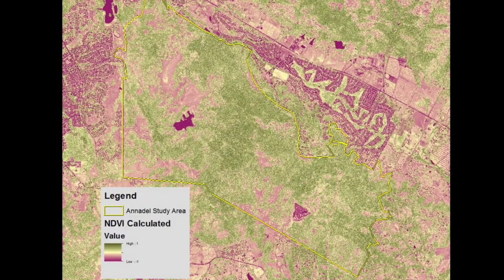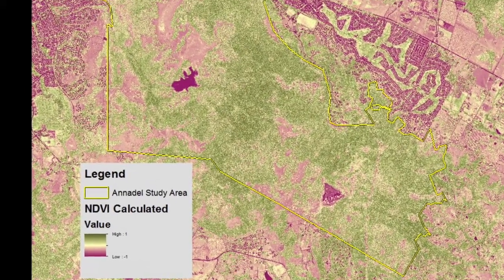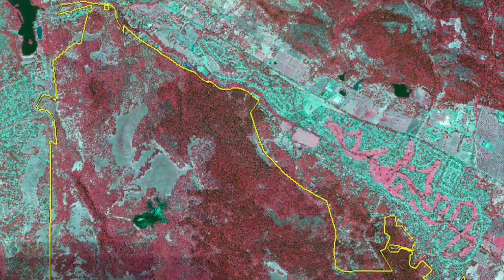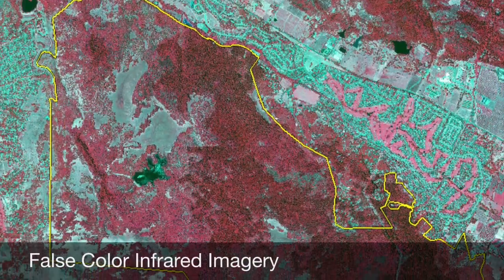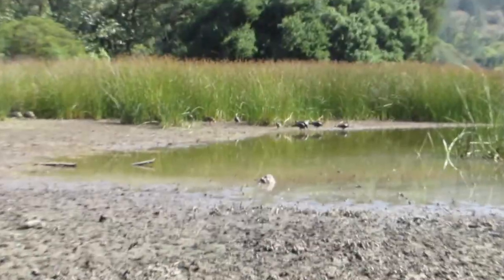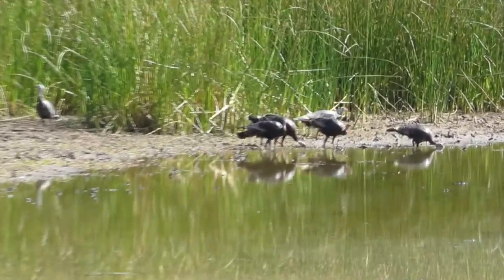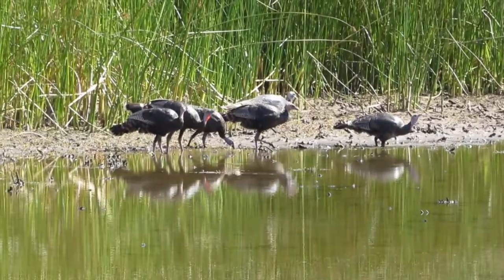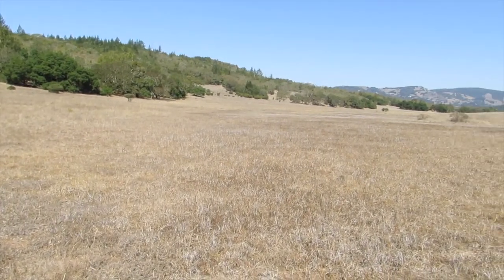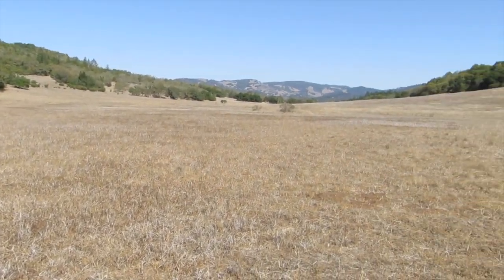Over time, aerial imagery has improved, and with the more recent use of drones to get more frequent and higher resolution images, the ability to utilize this data for land cover analysis will only improve. If we can accumulate enough wetland verification data in the field and incorporate this into our models as confirmed wetland areas, we can continue to improve upon our remote wetland delineation techniques for Annadel and other areas of Sonoma County.